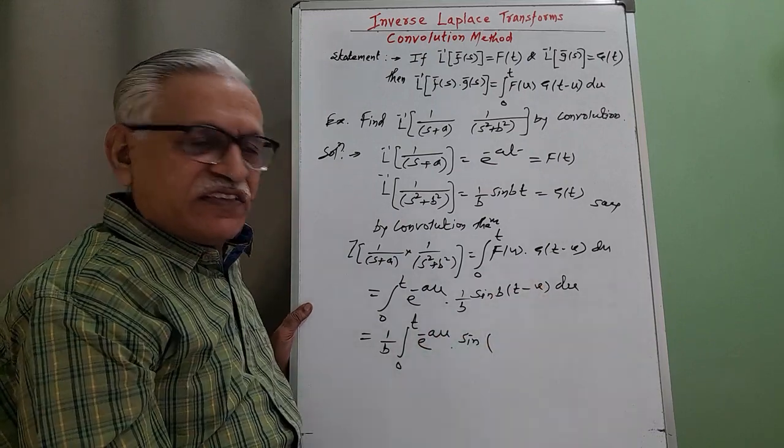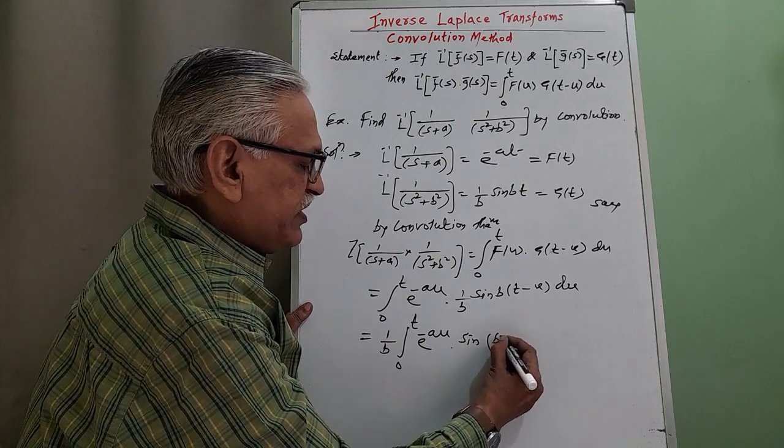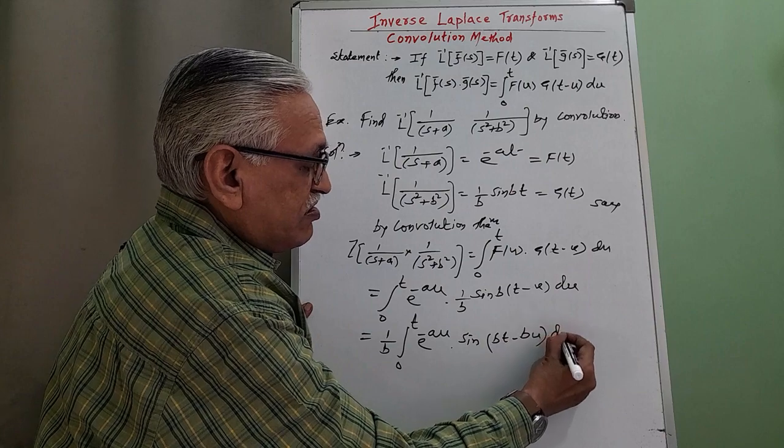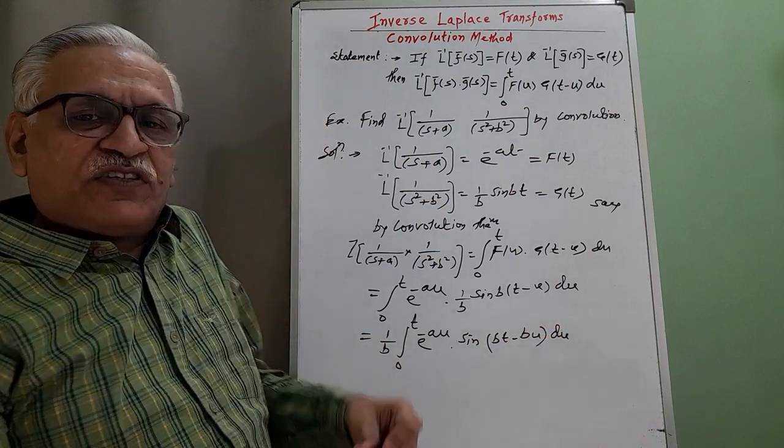Multiplying it inside, we get bt minus bu, and then its integration with respect to u.